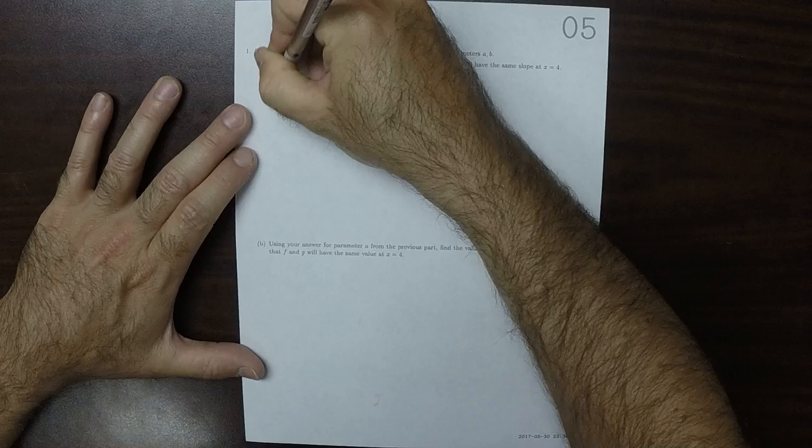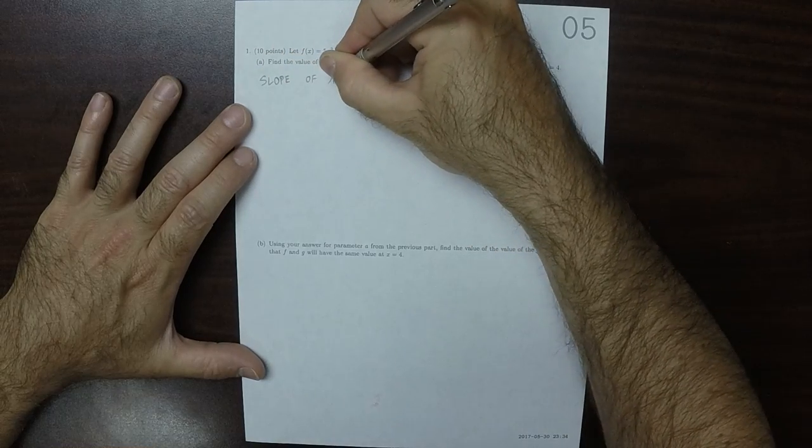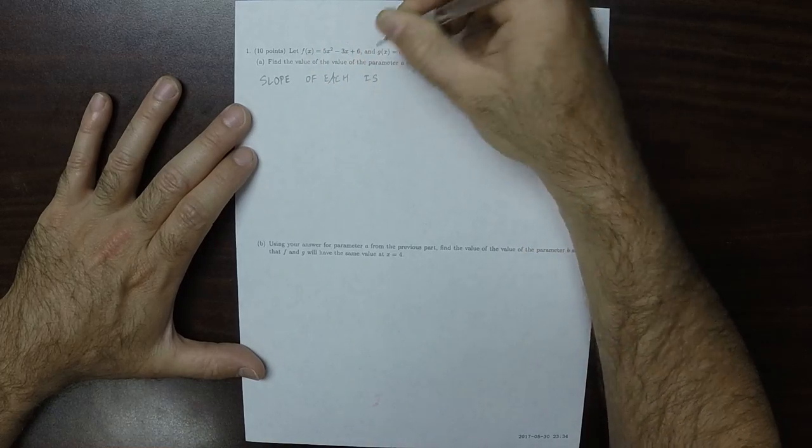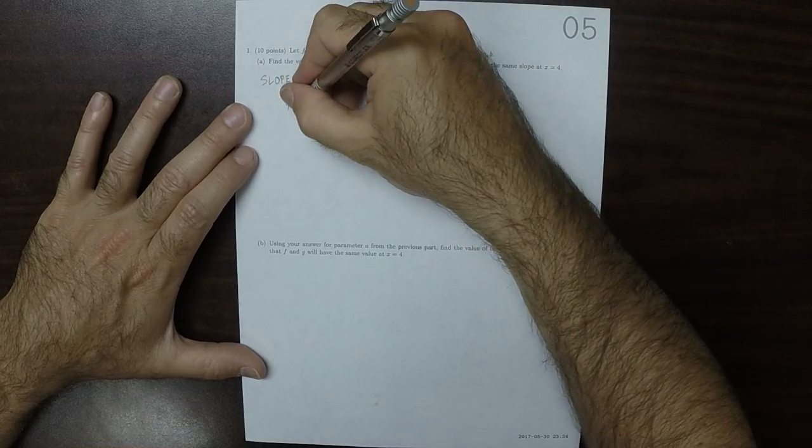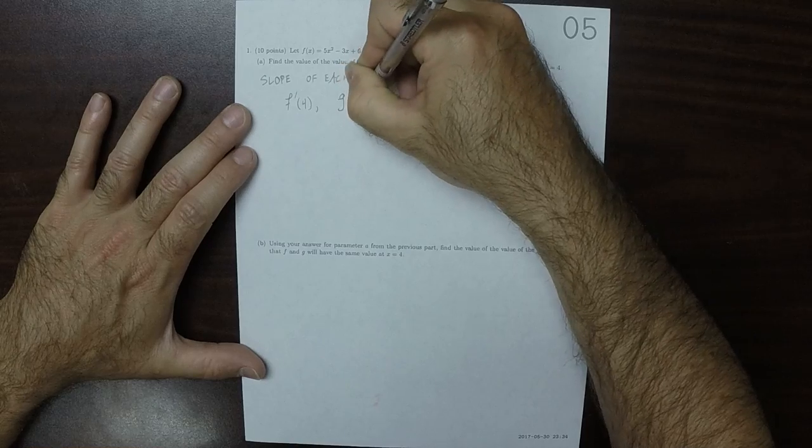The slope of each is the derivative of f evaluated at 4 and the derivative of g evaluated at 4. And since we want them to be the same, therefore what we're going to do is we're going to solve the derivative of f at 4 equal to the derivative of g at 4.